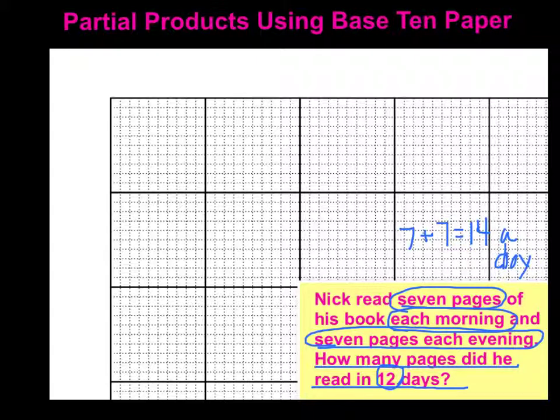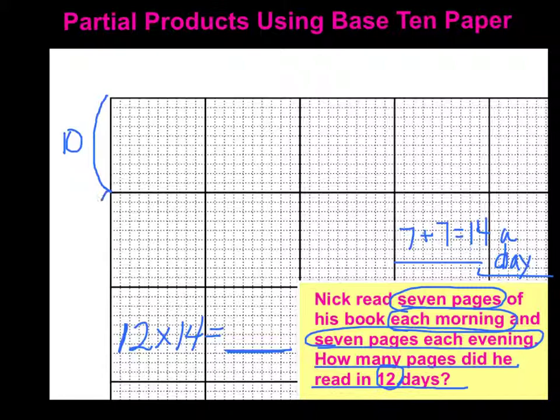But we have to figure out how many pages he reads in 12 days. So in this case, I only have one group of 14. I need to put together 12 groups or 12 days with 14 in each day. So I'm just going to think of this as 12 rows of 14, since my rows are my groups. And I'm going to come up here and mark that on my paper. So from here to here are my first 10 days, and then there's the other two days for a total of 12.